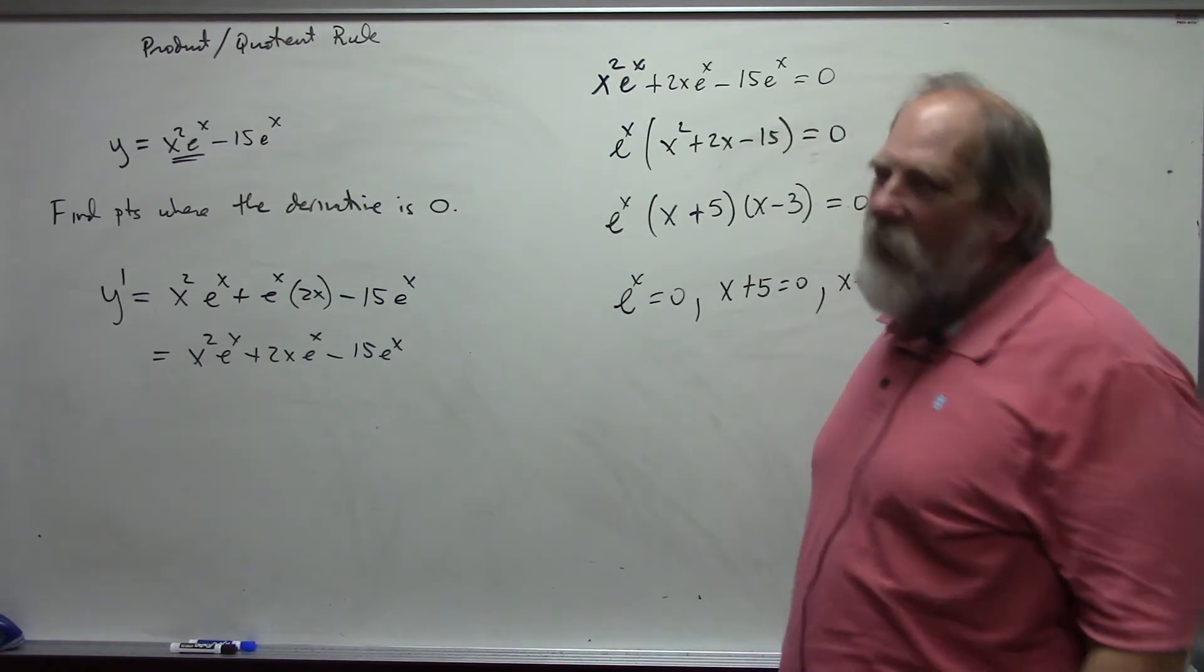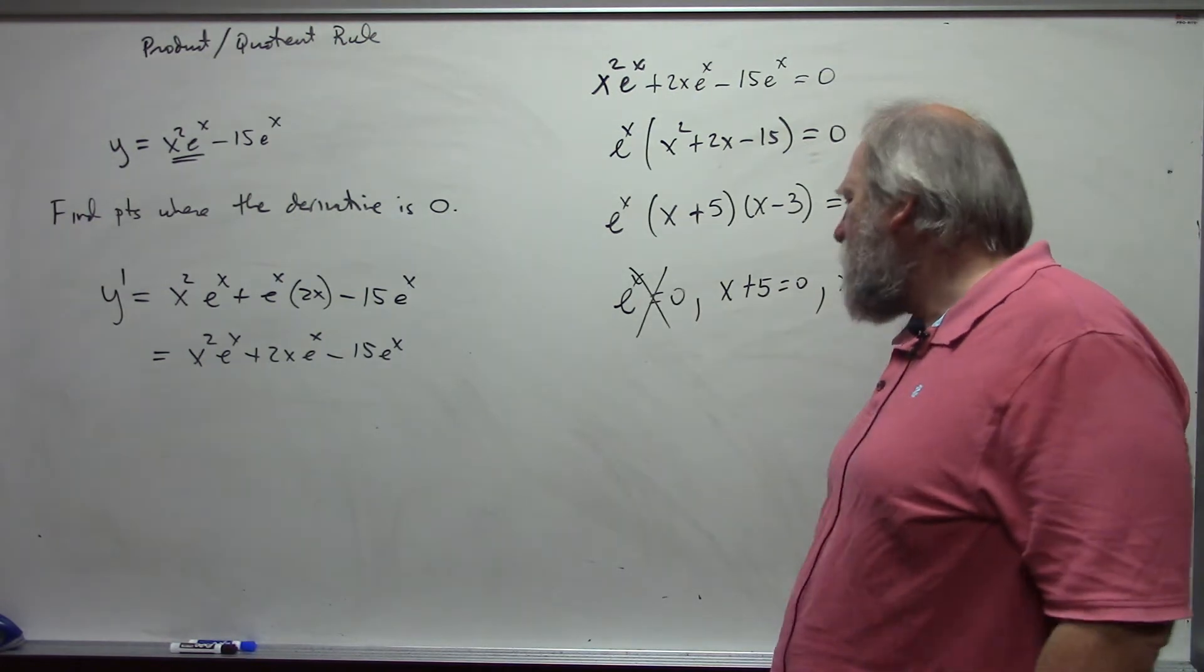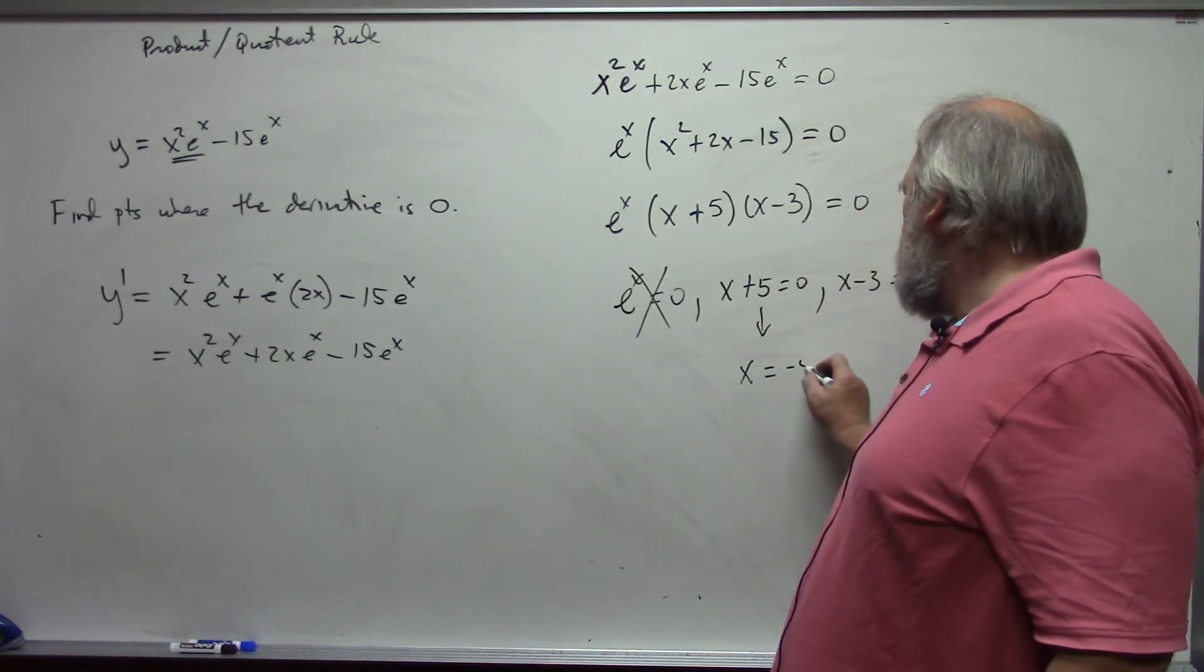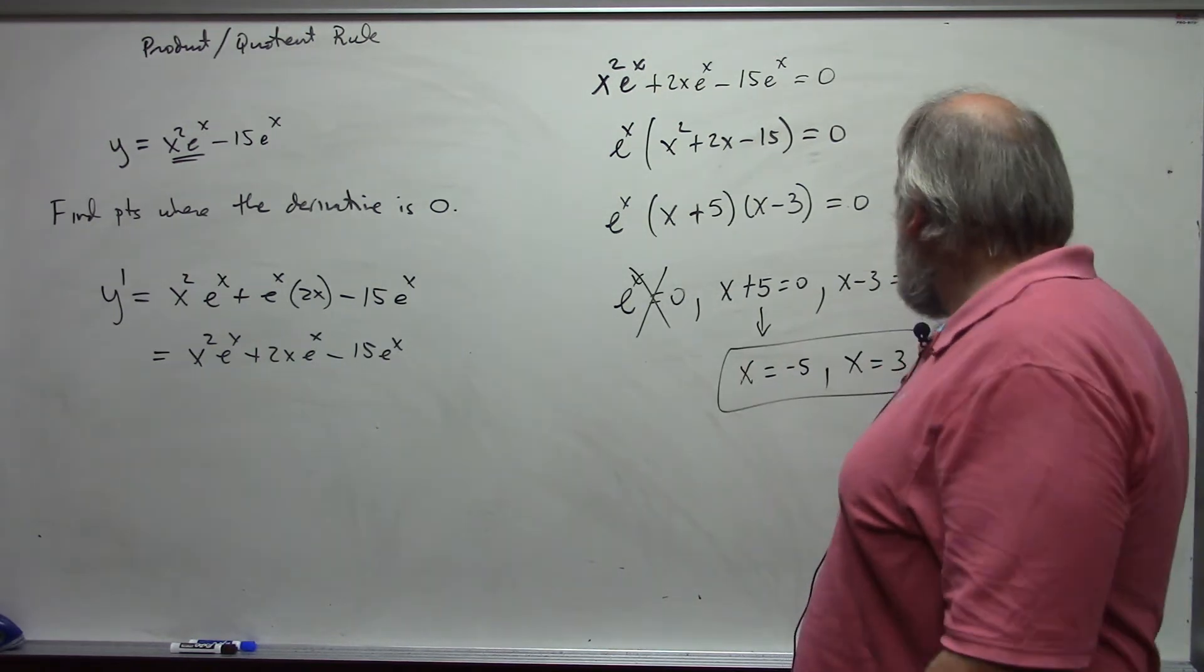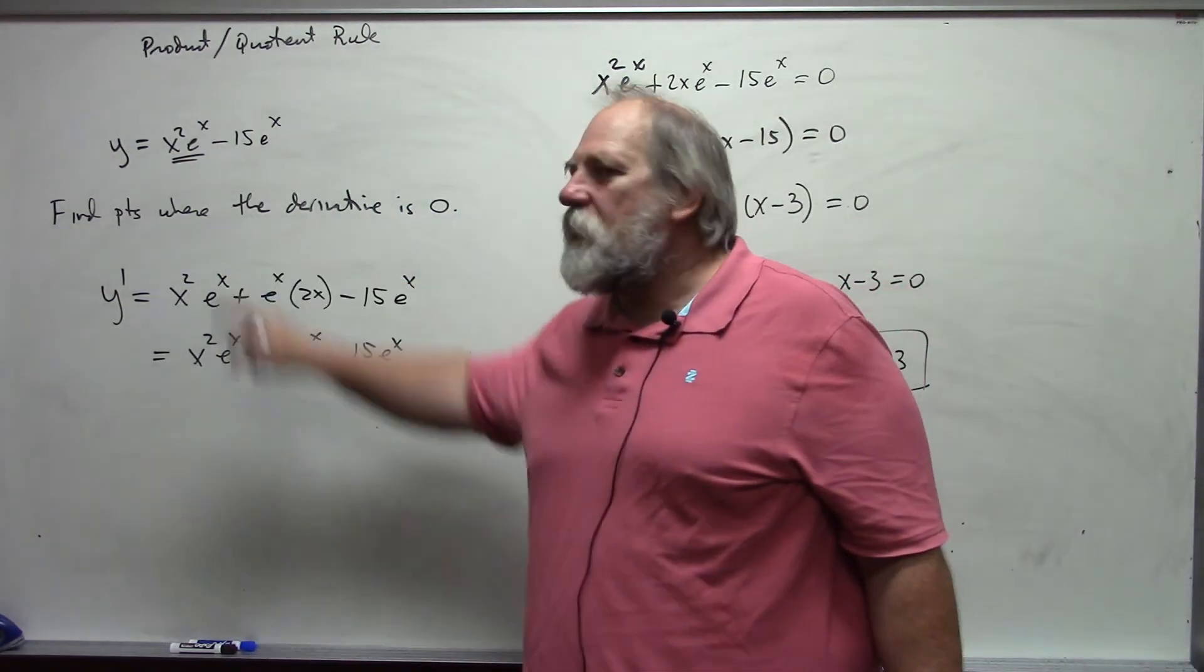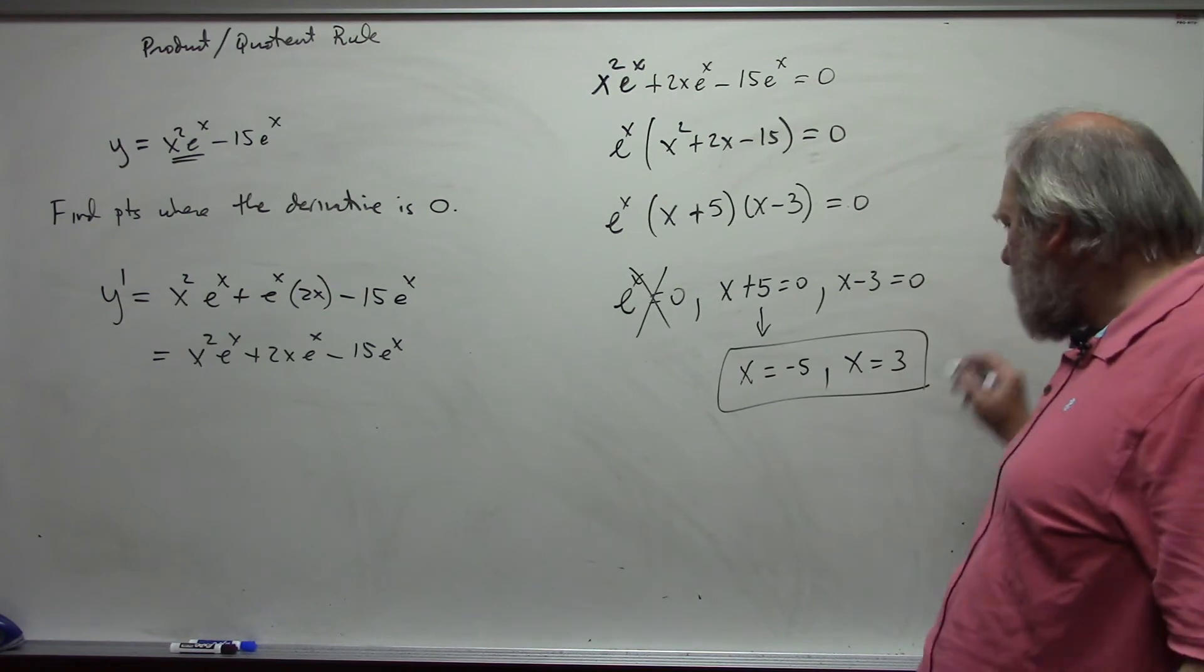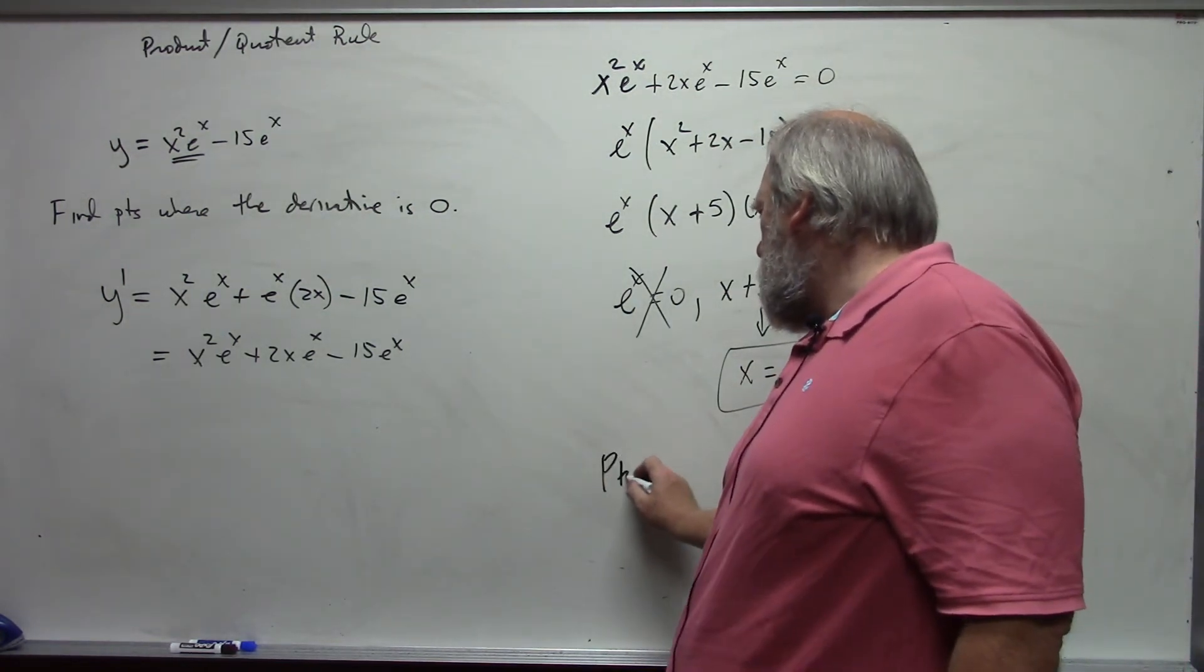First one is impossible. The exponential function is always positive. It is never 0. The second one gives me x equals negative 5, and the third one gives me x equals 3. So these would be my x values. Notice my original question was find points. So these are the x values. These are not the points.